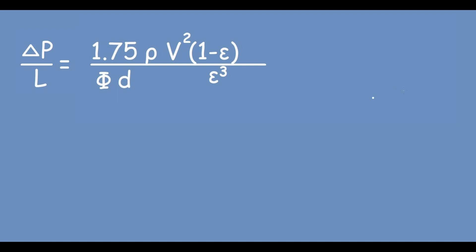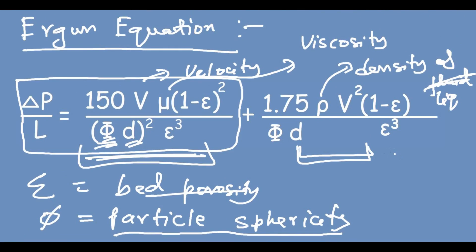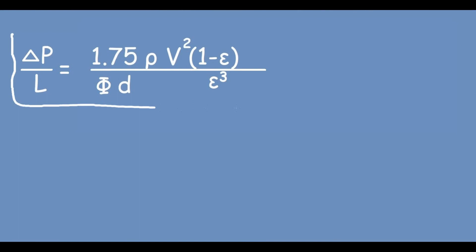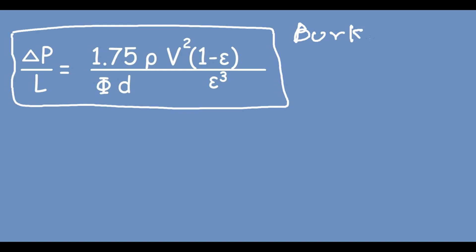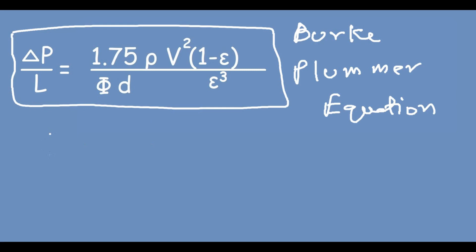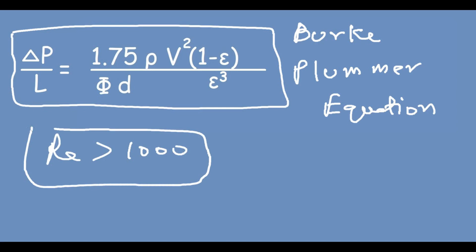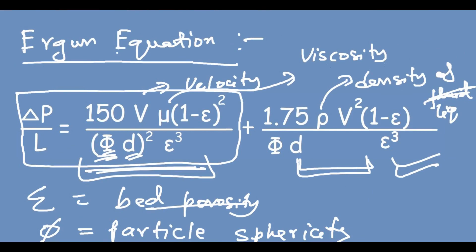If I eliminate the first part of the Ergun equation and take only the second part, this pressure drop equation is known as the Burke-Plummer equation. This equation is useful at high Reynolds number — that is, when Re > 1000. The Ergun equation is basically a generalized equation which contains both the Burke-Plummer part and the Kozeny-Karman part.